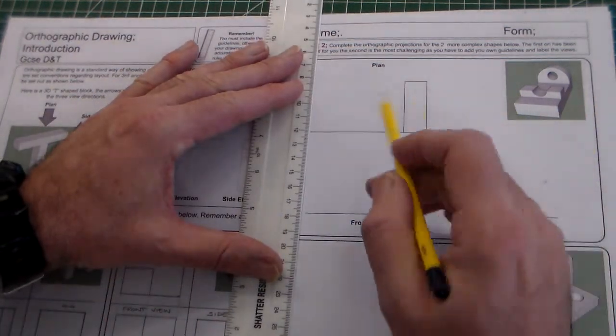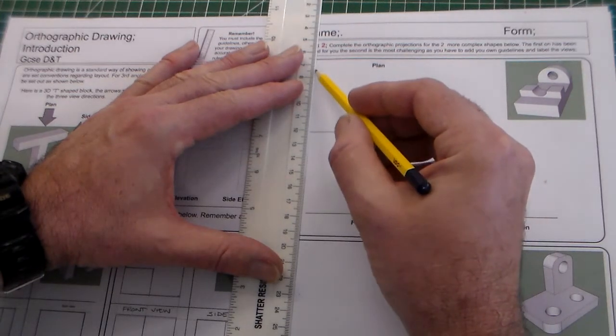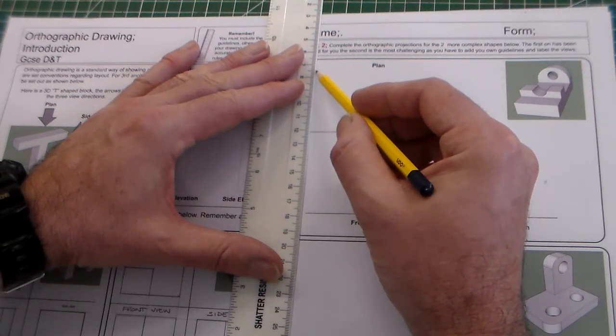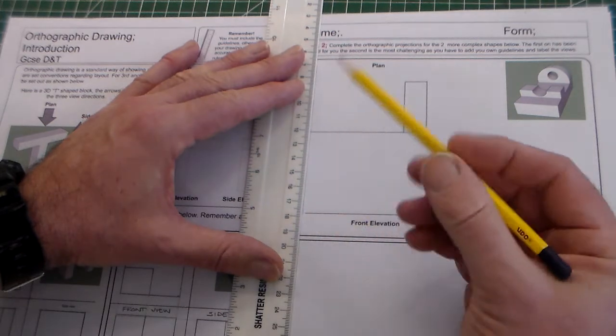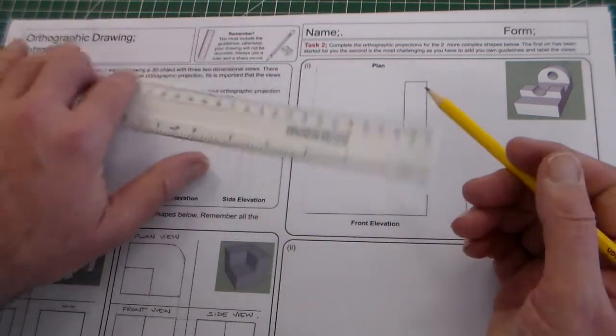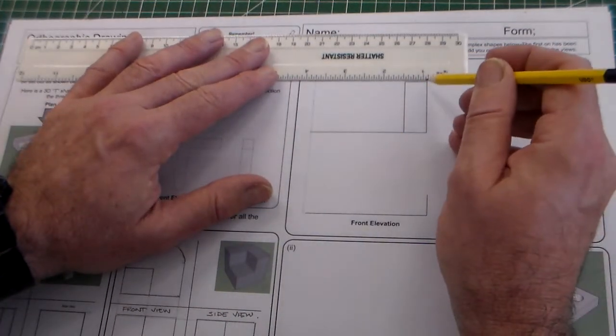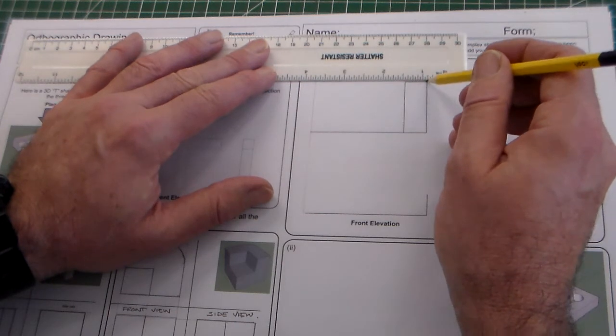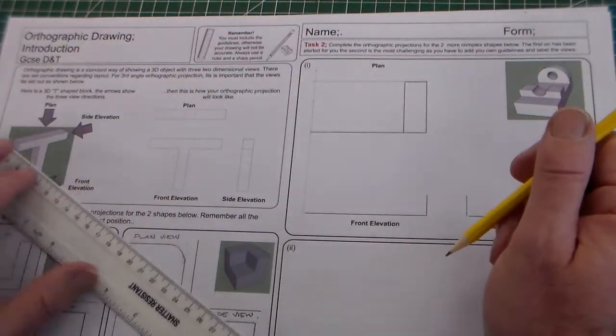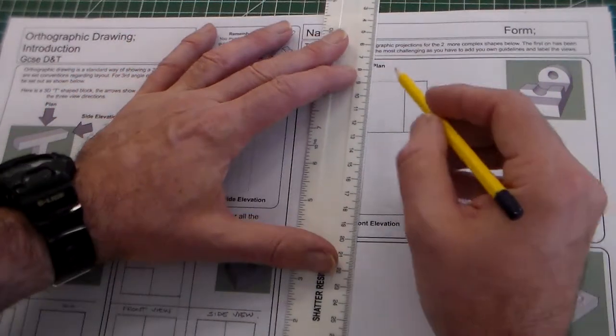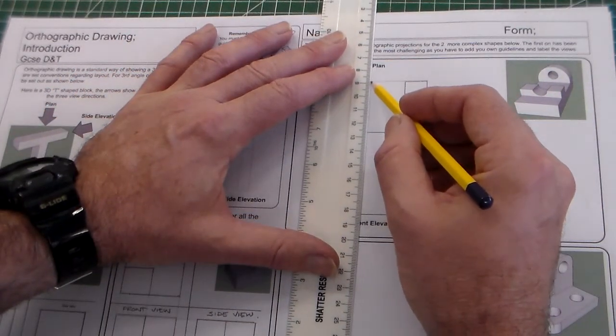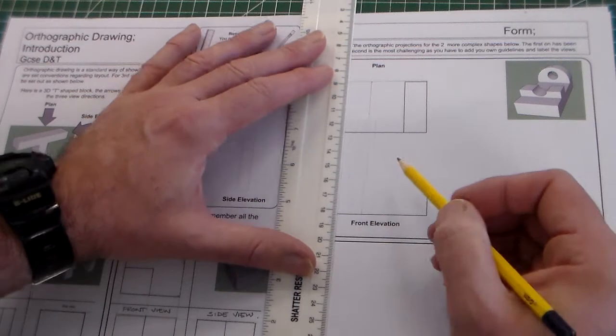So we can start by adding this detail here. We're using a sharp pencil and a ruler and we're just drawing fine construction lines to start with. We then need to add this detail here which again we can project down.